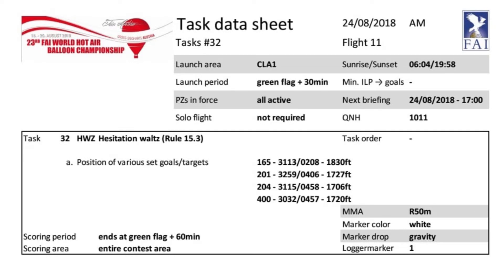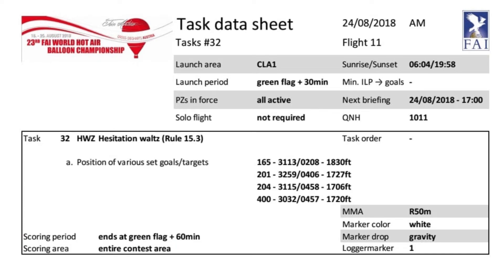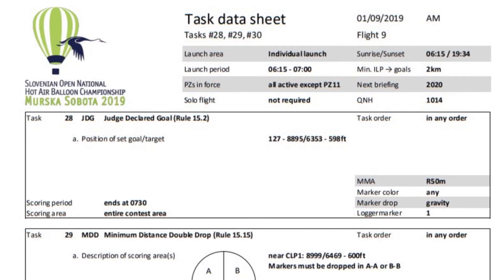I intend to make videos for each type of task and cover most of the task data for those tasks then. However, we can take a look at some of the task data now as it applies to all tasks, such as the scoring period, which is simply the time by which you must complete the task in order to achieve a result. In our example it ends at green flag plus 60 minutes, however it's far more common for just a time to be listed here, such as in this example.